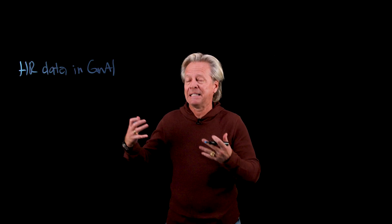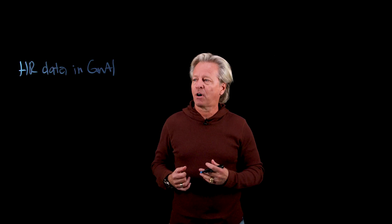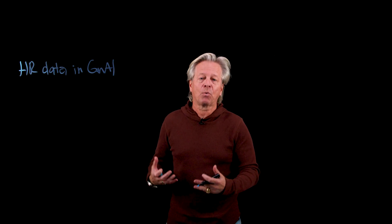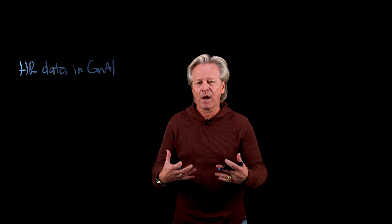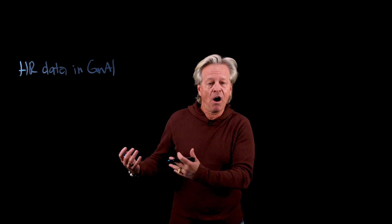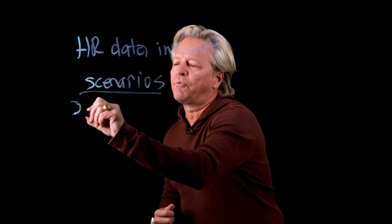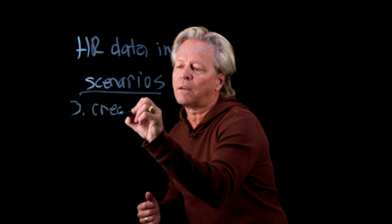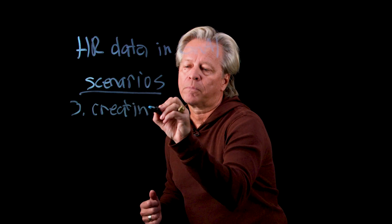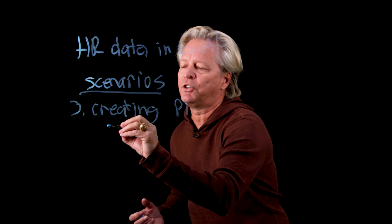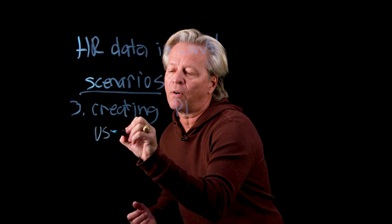This is why we're talking about it — we're now seeing HR data start being part of Gen AI applications, and we want to make sure that we're doing the right thing. Today's scenario for our third video is around creating PI or SPI — personally sensitive information — during the user interaction.